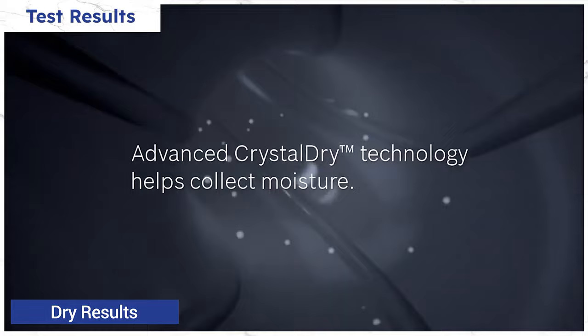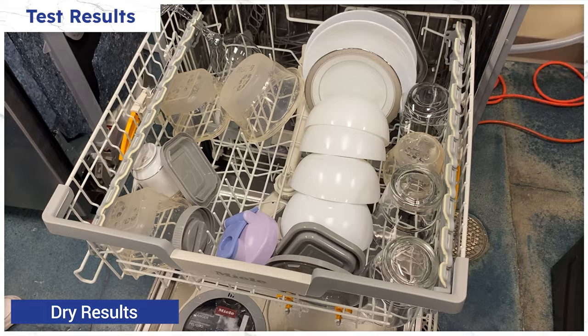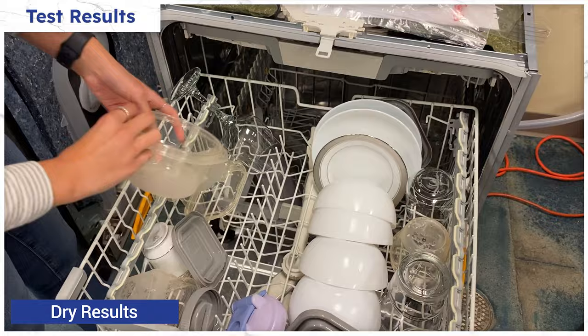Miele was a close second to Bosch's crystal dry with volcanic elements to speed drying through heat and moisture absorption. It dried dishes well, but it did leave a bit more residual moisture than the Bosch did on plastics.